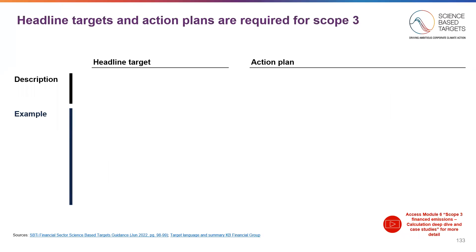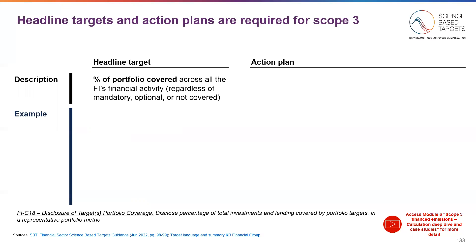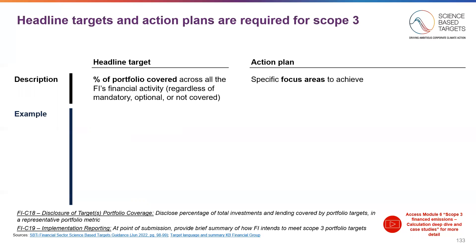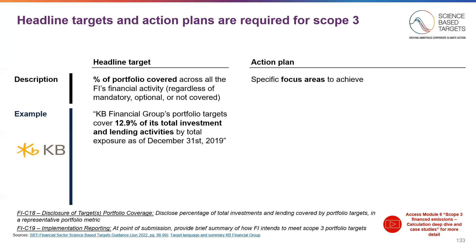There are two other requirements when submitting one's targets: a headline target and an action plan for Scope 3. For headline targets, one must show the percent of the total portfolio covered across all investment and lending — that's regardless of whether or not it's mandatory, optional, or not covered. We provide an example from KB Financial Group, which shows that by setting targets on all the required assets and some of the optional assets, it covers 12.9% of total investment and lending activity — that's 12.9% out of all of its activity, whether mandatory, optional, or not covered.